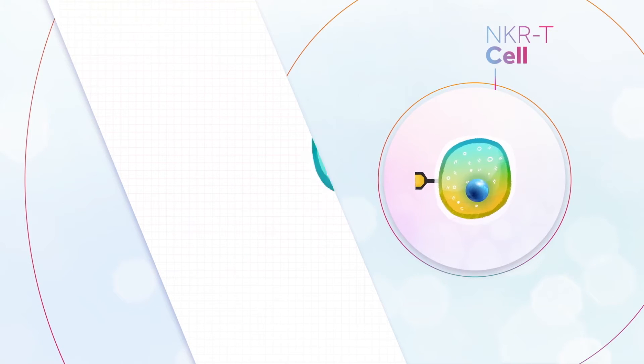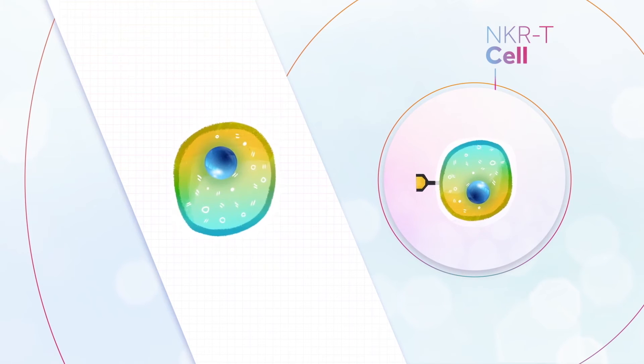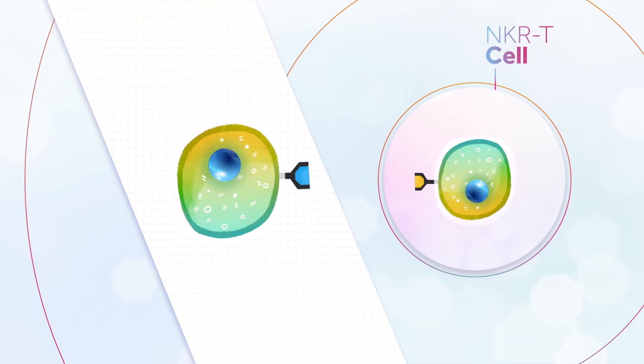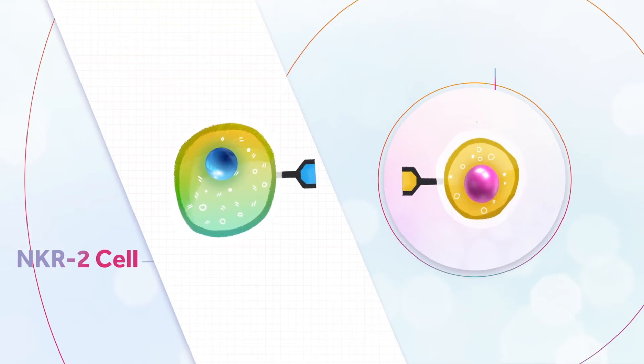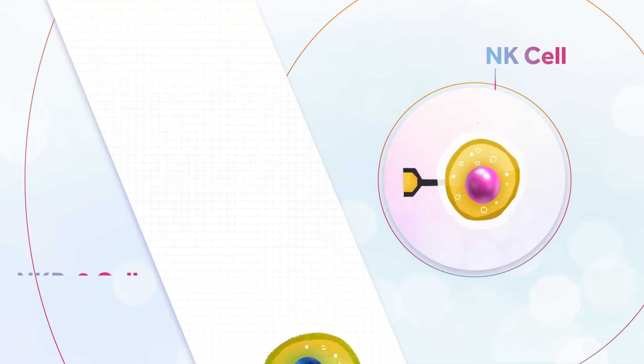NCAR 2 T cells are T cells engineered to express a receptor naturally expressed by NK cells, the receptor NKG2D.